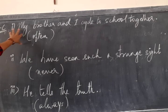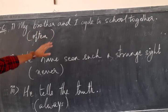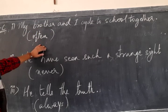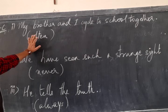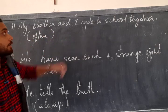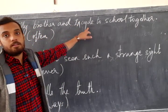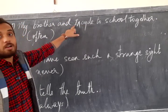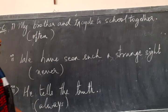So, first sentence, my brother and I cycle to school together. And we have to use the adverb of frequency often. And where do we use often? We use it in the mid position between the subject and the verb. So, often will come in between my brother and I cycle. The subject and the verb. It will be present in between I and cycle. So your answer will be, my brother and I often cycle to school together.